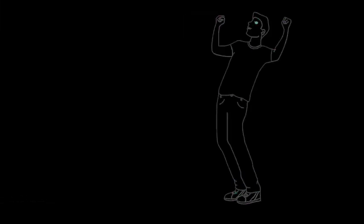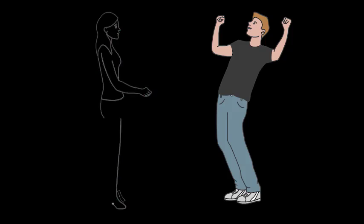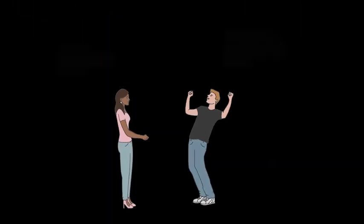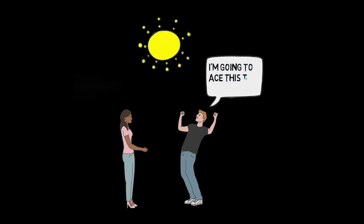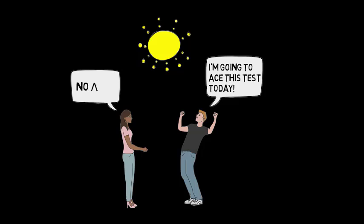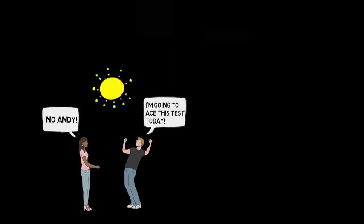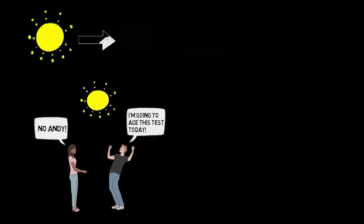Maria and Andy are high school students in Arizona. Andy always gets an A on his math test when it's sunny outside. On one sunny day before Andy goes to math class, he tells Maria "I'm going to ace this test today because it's sunny." Maria objects: "No Andy, you'll not ace this test because it's sunny. You'll ace this test because you studied. The fact that it's sunny outside has nothing to do with it."